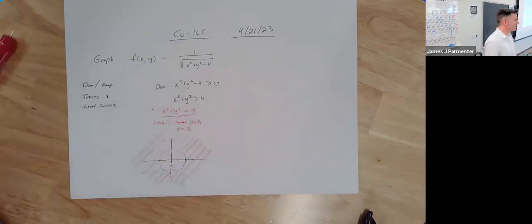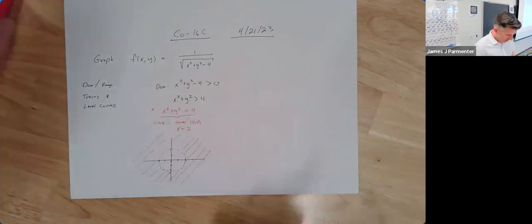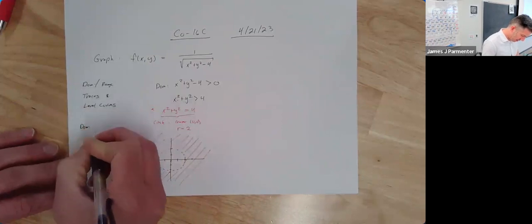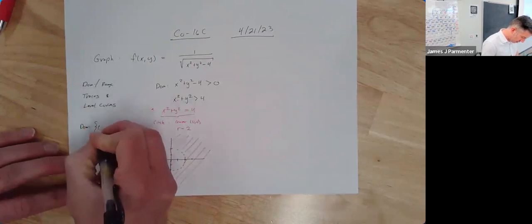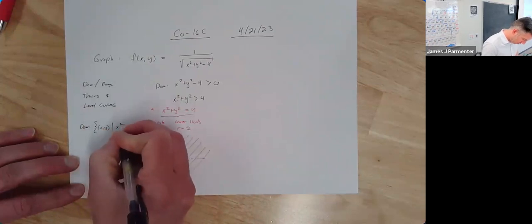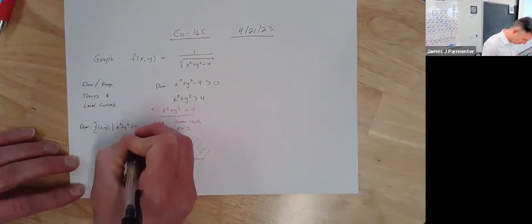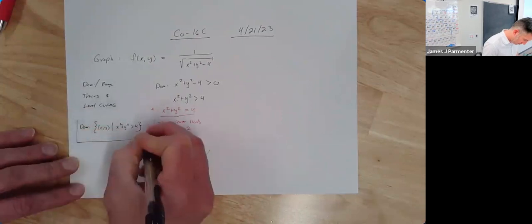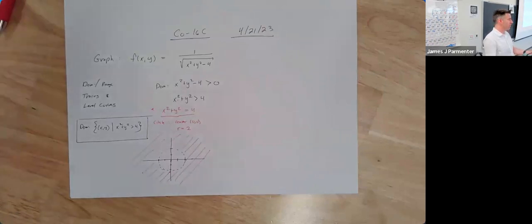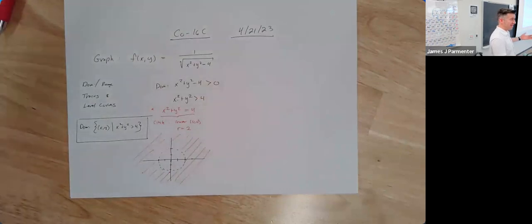You need to draw this only if you're asked to draw the domain. If I write the domain, it's kind of anticlimactic: the domain is the set containing all x and y such that x squared plus y squared is greater than 4. It never really feels like you've done much — you've just said all points so that that inequality is true.